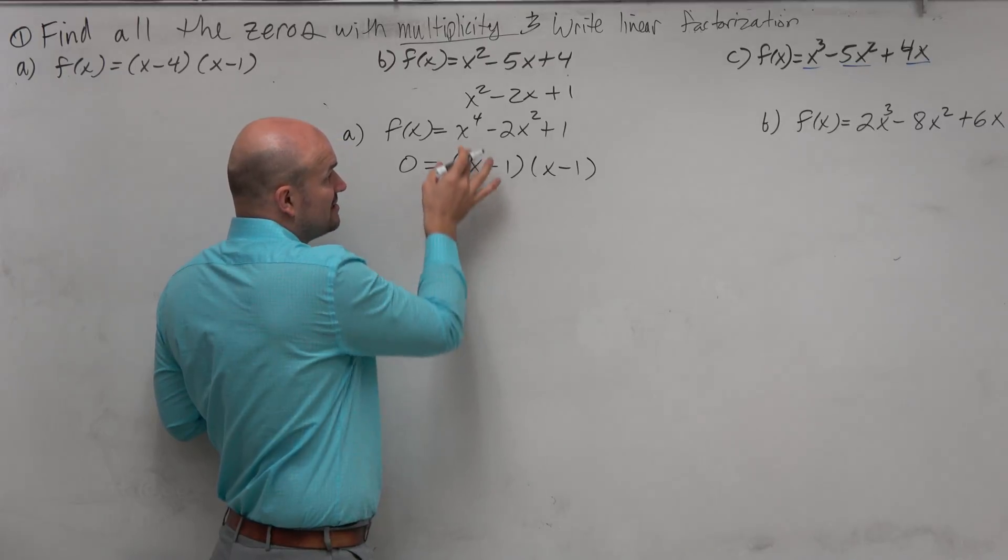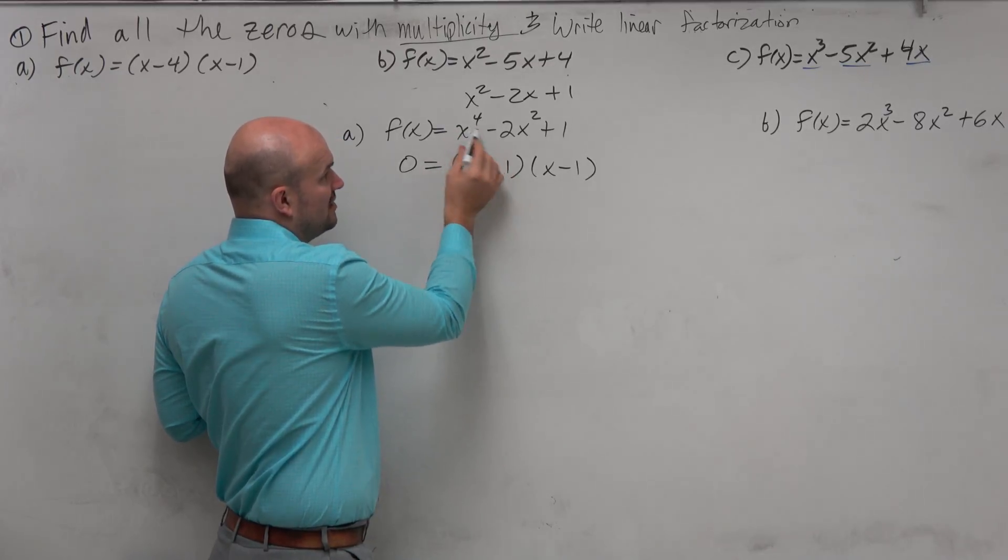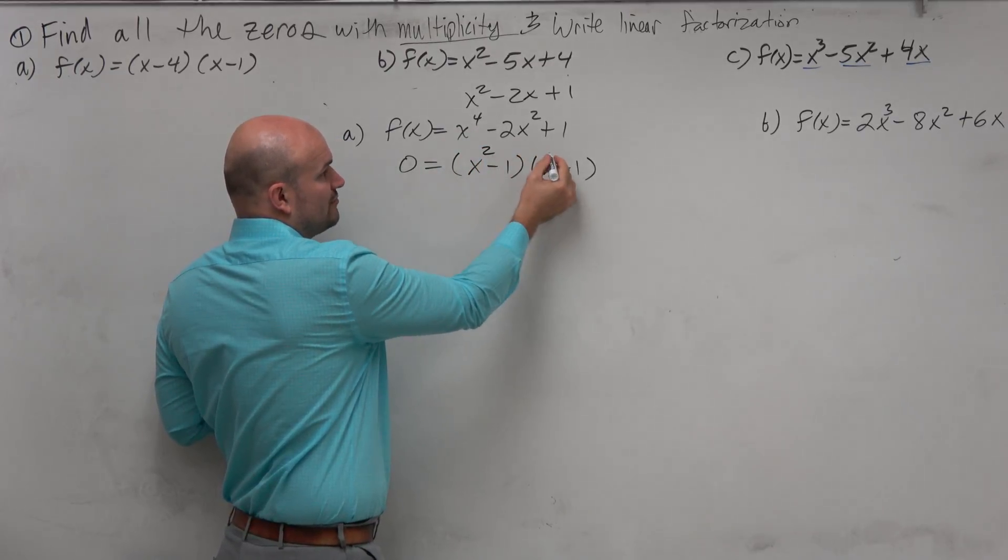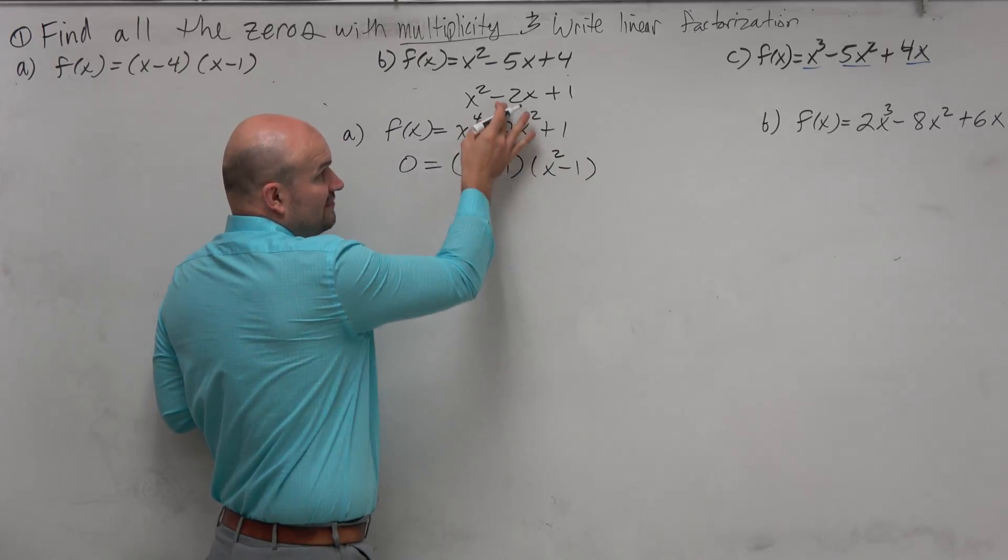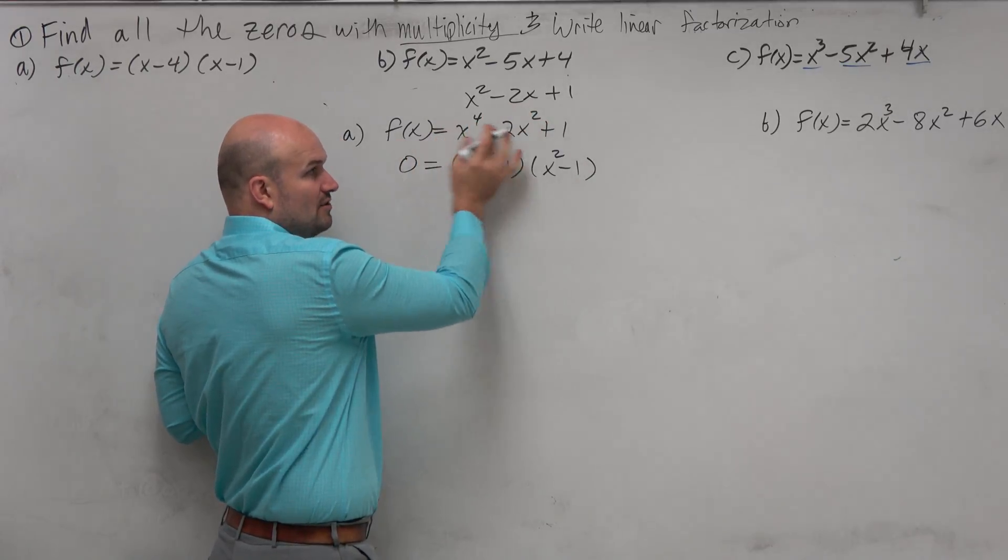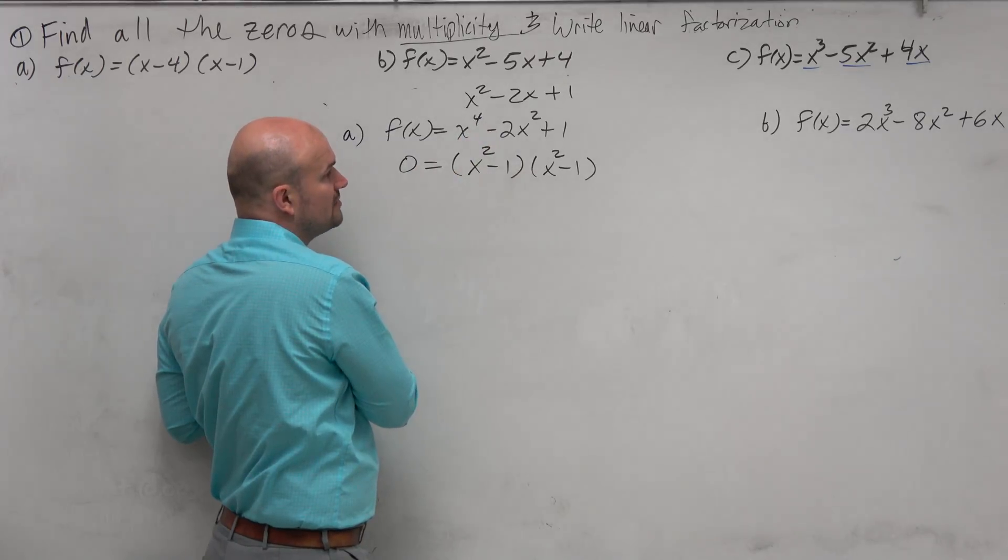But the difference here is that they need to multiply to give me x to the 4, so I'm going to raise the powers. And that's always simple as anything. Think of it as a quadratic and then just raise the powers to match your function.